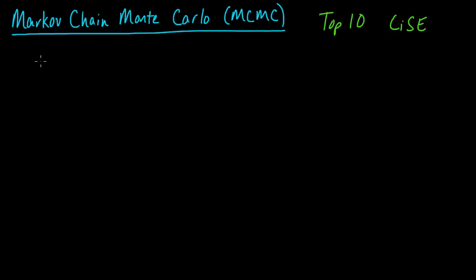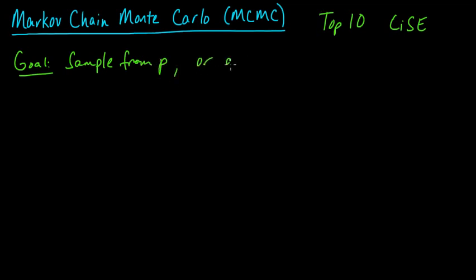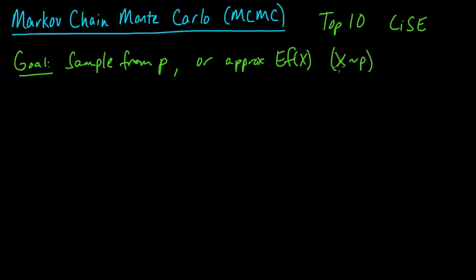The goal of MCMC is that we want to sample from some distribution P, or approximate an expected value — an expectation E of f(x) for some function f. And f might be a very complicated function.